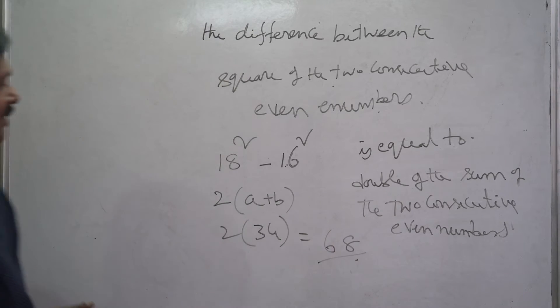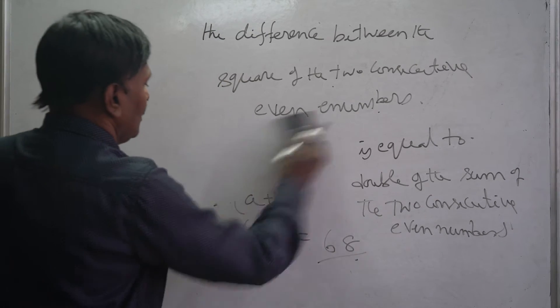18 plus 16 is 34, so this is 2 times 34 is 68. That is the problem.